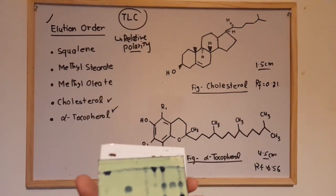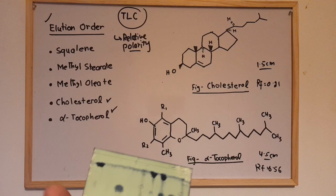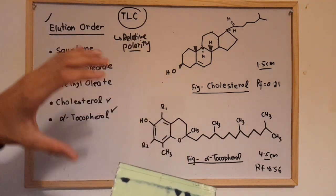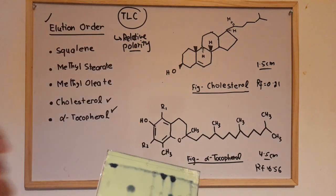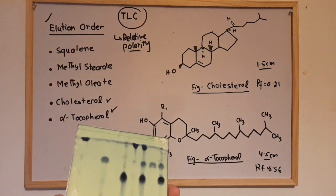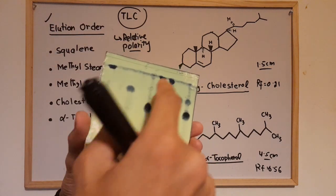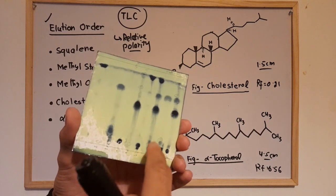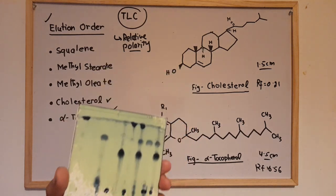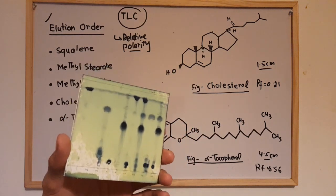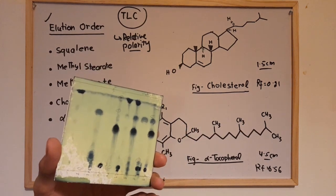That covers the elution order in TLC. You can see from these TLC plates how far different components travel. If an unknown solvent is given, that scenario will be discussed in the upcoming video. Thank you so much for watching.